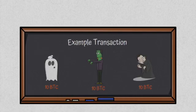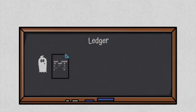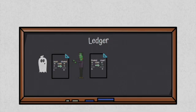Here's an example of a transaction using bitcoin among three friends. Each has 10 bitcoins to start. Ghost gives Frankie five bitcoin — Frankie now has 15, leaving Ghost with five. Frankie then gives one bitcoin to Count — Count has 11, and Frankie is left with 14.